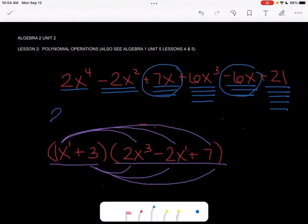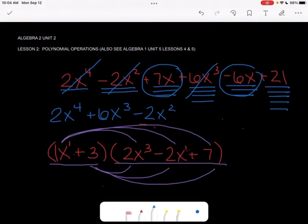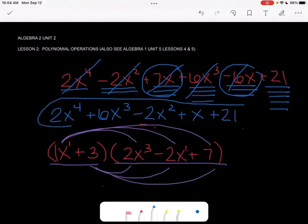I've got my 2x to the 4th. And I'm going to go in order from highest exponent to lowest. The next one I have is a positive 6x cubed. Then I've got a negative 2x squared. Now I can combine my 7x and minus 6x. That becomes 1x or just x. And then that plus 21. And it is in standard form, because it is in order from highest exponent to lowest exponent.